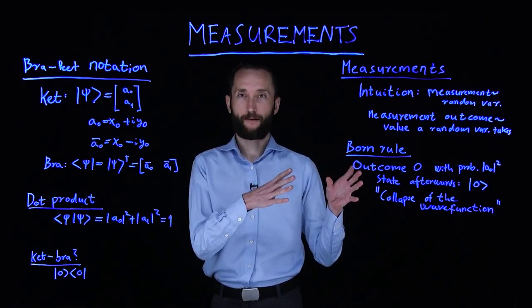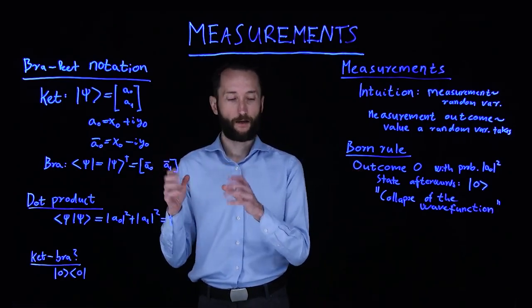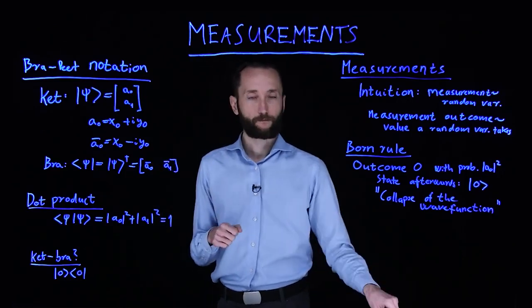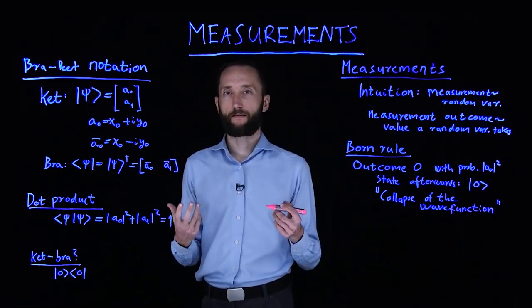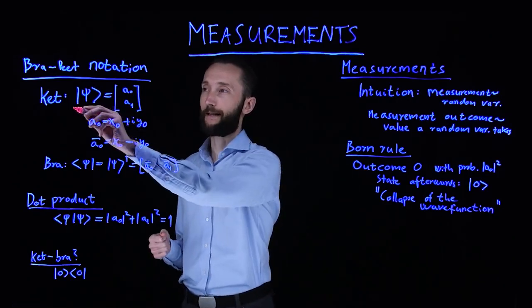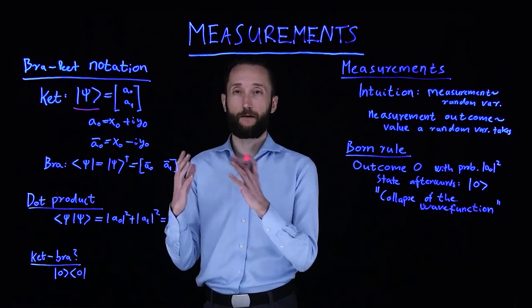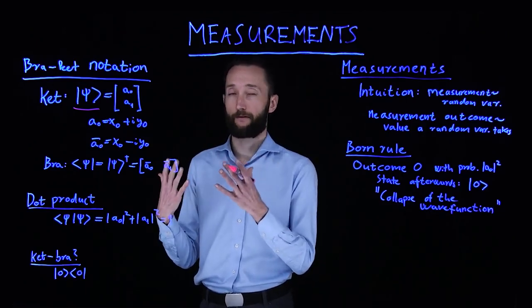But before we introduce measurements, first we have to introduce a bit more of the notation. If you remember, we introduced a quantum state as a column vector which we write as a ket. We have a vertical bar and an angle sign, and in between we write the name of the vector or the variable.